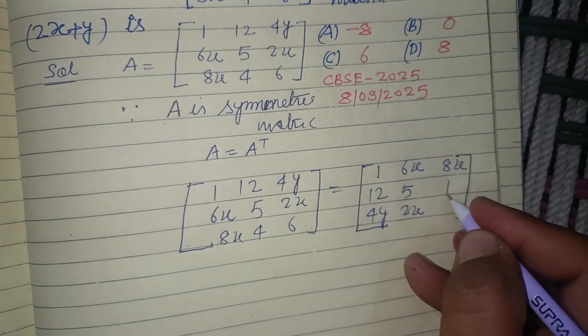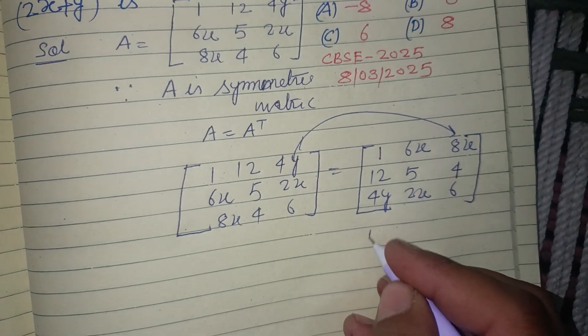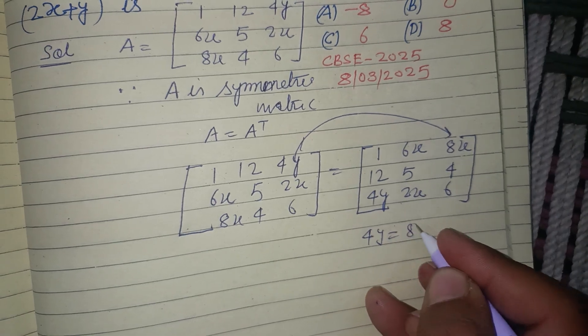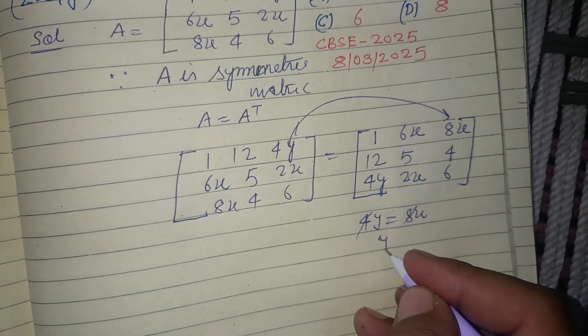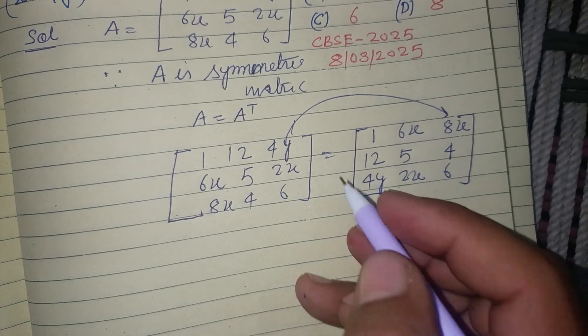8x, 4, 6]. Now comparing elements here, 4y equals 8x, so y equals 2x. And from here